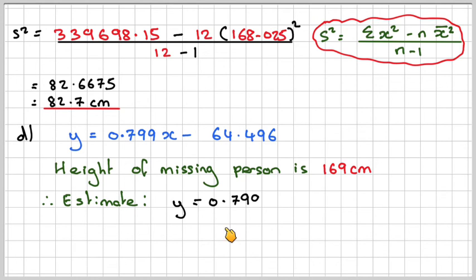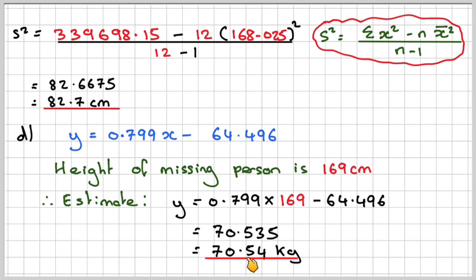So the estimate will be, show the working, which is 0.799 times 169 minus 64.496, which will give me 70.535. We were asked to give it to two decimal places, so that will be 70.54 kilograms.